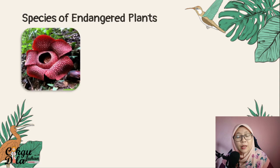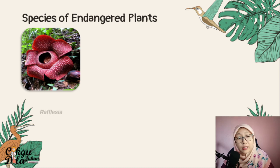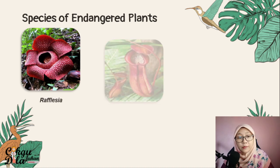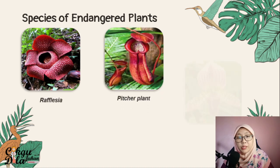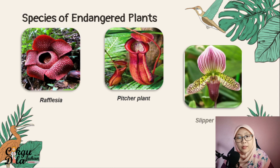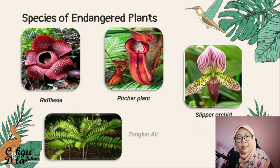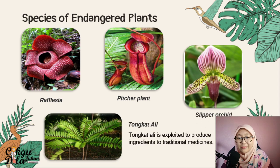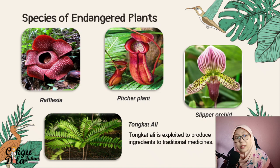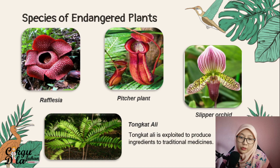We also have species of endangered plants. For example, the Rafflesia, the pitcher plant, the slipper orchid, and tongkat ali. Tongkat ali is an endangered species because it is exploited to produce ingredients for traditional medicine.